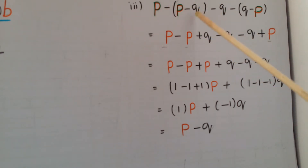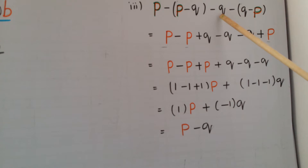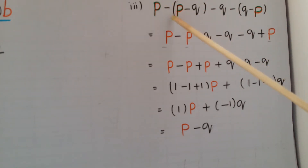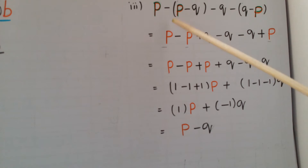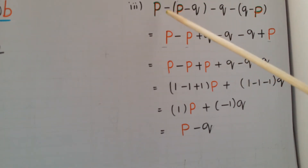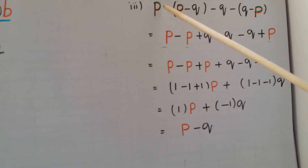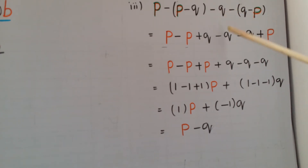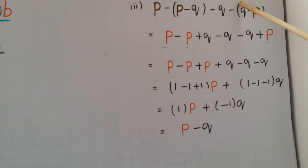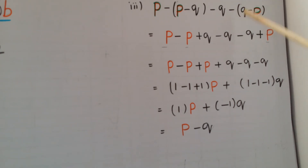The next problem is: p minus (p minus q) minus q minus (q minus p). All variables look similar but with different signs, so don't get confused. First remove the brackets by multiplying with the minus sign in front. Minus times plus p is minus p; minus times minus q is plus q; then minus q; and minus times minus p is plus p.